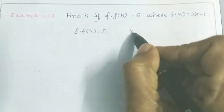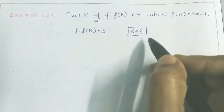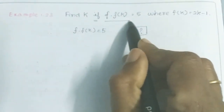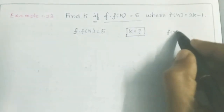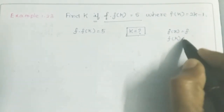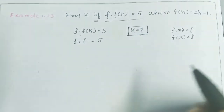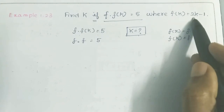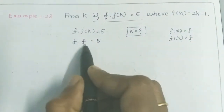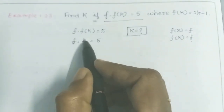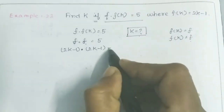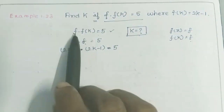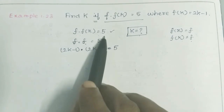So, what we need to do is find the k value. We have the condition that f(f(k)) is equal to 5. So, f of k is equal to f, and the given condition is f(f(k)) = 5. The f(k) value is equal to 2k minus 1.